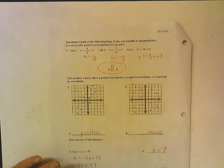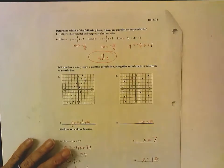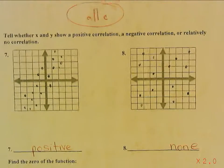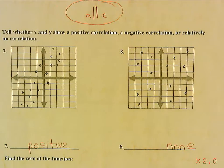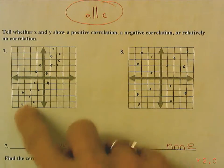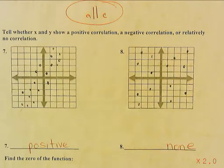Numbers 7 and 8 — let me zoom in. Number 7 is obviously positive correlation because you can draw a positively sloping line through the data. Number 8 is no correlation.